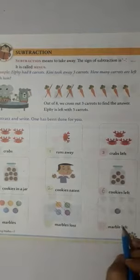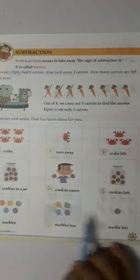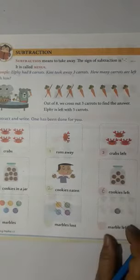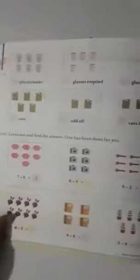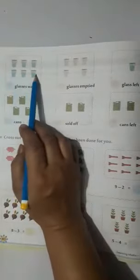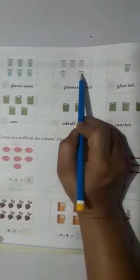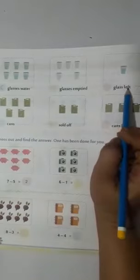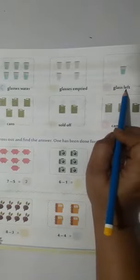Now in this question there are six glasses right here. Six, and one, two, three, four, five are empty glasses. So one glass left which is full of water.